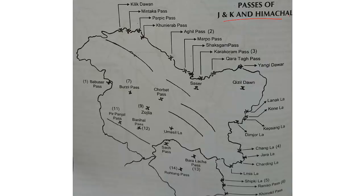Apart from the passes just discussed, you also have to know the passes of Jammu and Kashmir as well as Himachal Pradesh. This can be a potential question in your prelims examination — they can ask you to arrange from east to west, or west to east, north to south, or south to north. The important ones include Shipkila, Rohtang Pass, Baralacha Pass, Changla, Chardungla, Zojila, and Banihal Pass. Kindly pay heed to this.